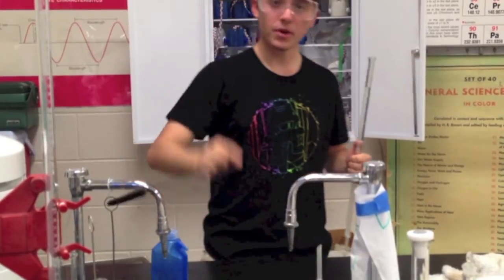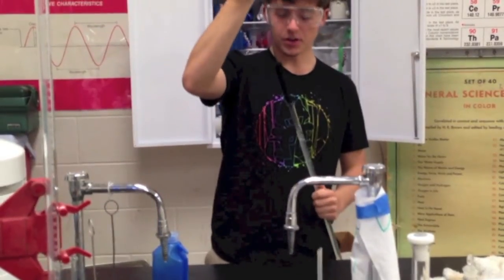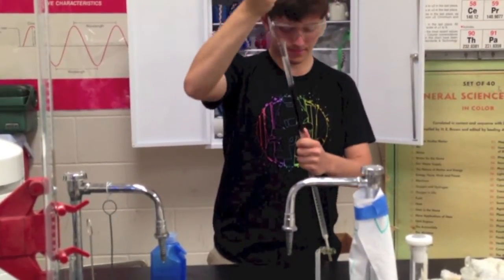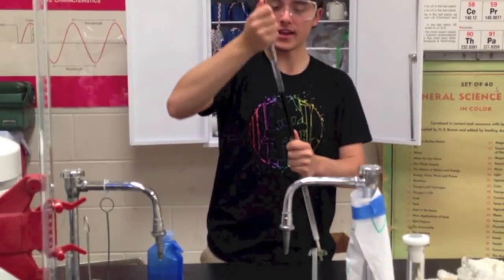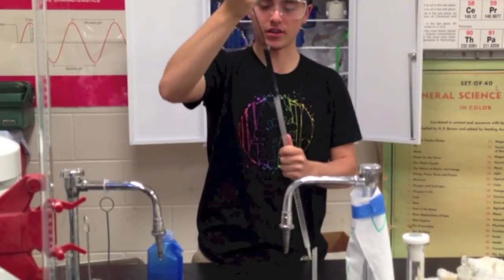At that point, take your burette scrubber and insert it into the burette all the way to the bottom. Now, move it up and down a few times in order to get the detergent to coat the inside completely.